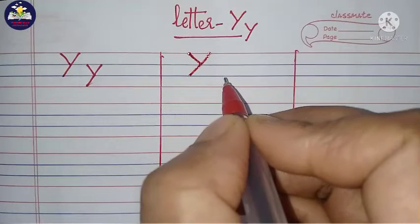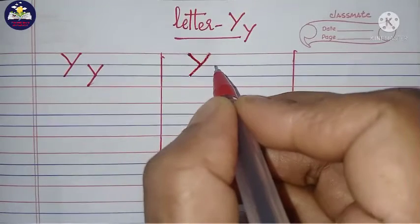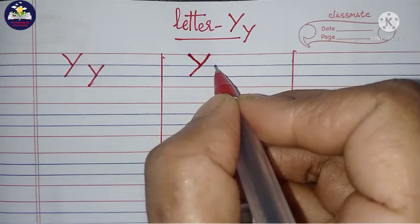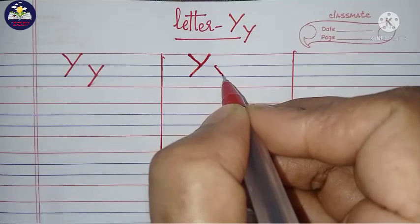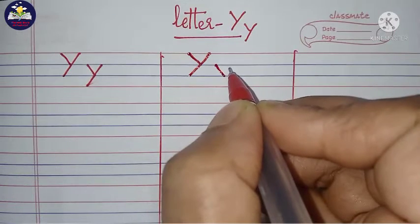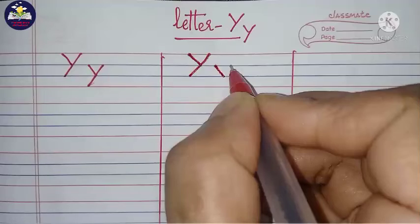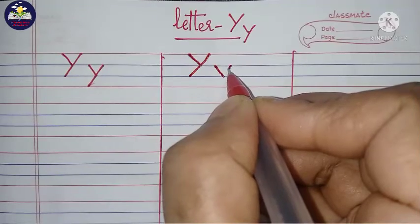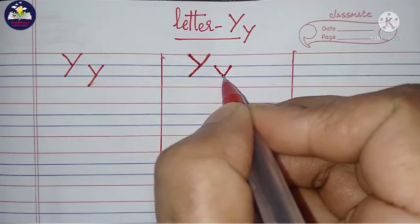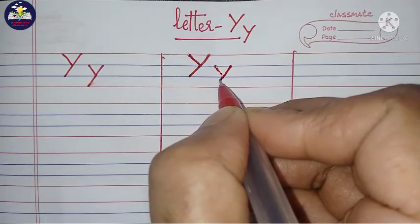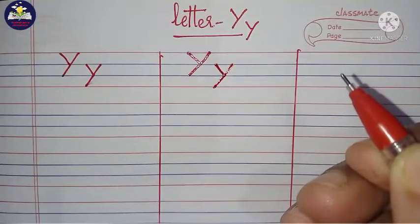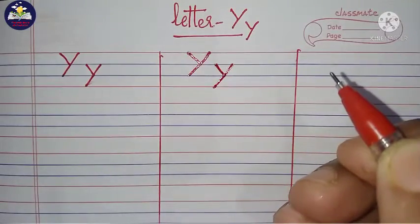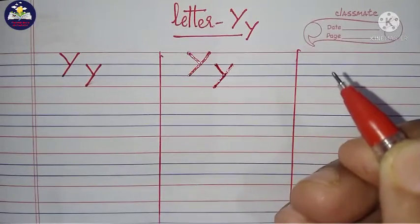To write small letter Y, start from the second line, draw a small backwards slant line till the third line. Then start from the second line, draw a forward slant line till the fourth line. This is small letter Y.